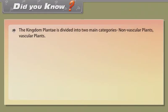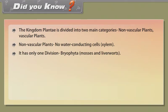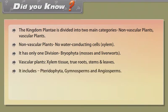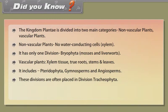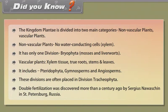Did you know? The kingdom Plantae is divided into two main categories. Non-vascular plants have no water-conducting cells (xylem); this includes only one division — Bryophyta (mosses and liverworts). Vascular plants have xylem tissue, true roots, stems and leaves, and include Pteridophyta, Gymnosperms and Angiosperms — these divisions are often placed in division Tracheophyta. Double fertilization was discovered more than a century ago by Sergius Navashchin in St. Petersburg, Russia.